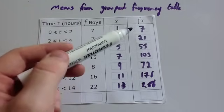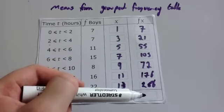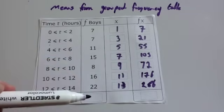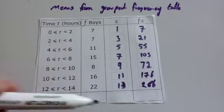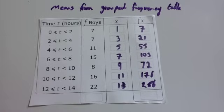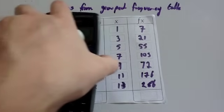Now like we were doing the means from frequency tables, we're going to add up our fx column, add up how many people there are, divide the grand total by how many people there are, and that will give us the mean. So we're now going to add up all the fx's.